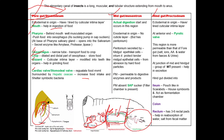At the junction of midgut and hindgut, a valve known as the pyloric valve is present. This valve regulates the movement of digested food from the midgut to the hindgut. Surrounding the pyloric valve, a group of tubular structures are there known as Malpighian tubules.